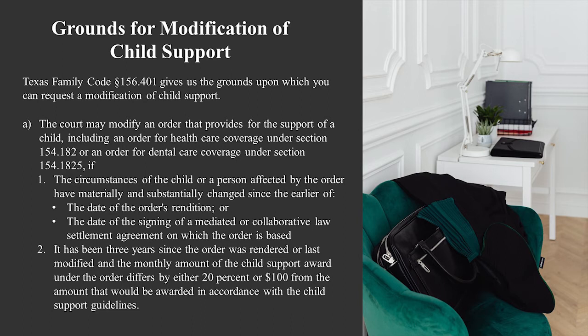When you modify for child support — which is the topic of this video — after getting through the preliminary stages of where and who may file, you now have to have grounds to file. Six months after you enter into a final order, can you just turn around and modify for an increase? Generally no — that's difficult. They typically want you to wait three years. During the first year, a modification you file is subject to what we call sua sponte dismissal — the court can just dismiss it.